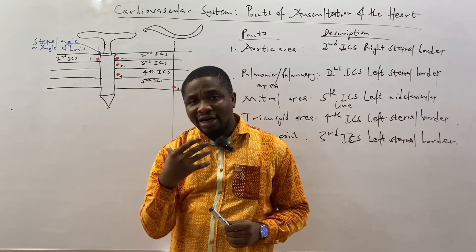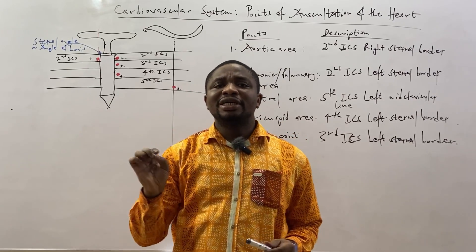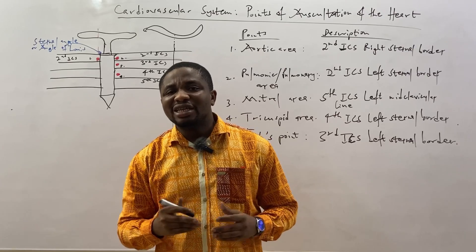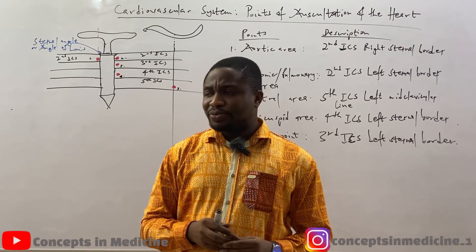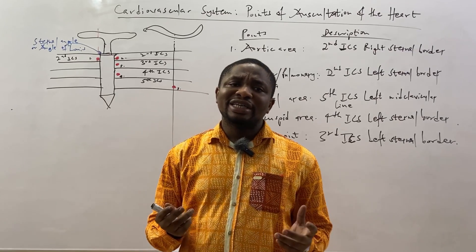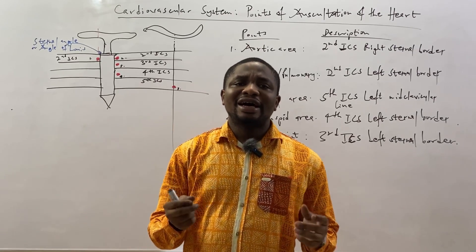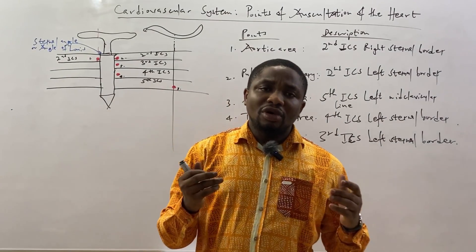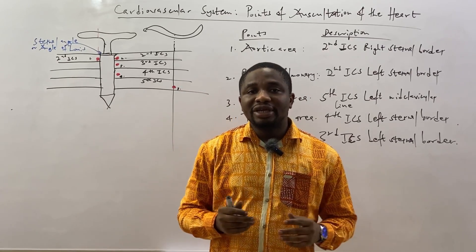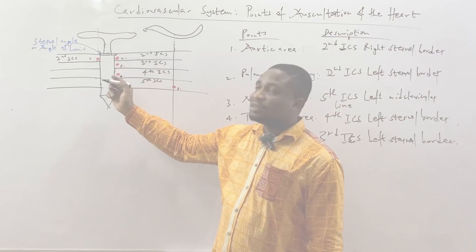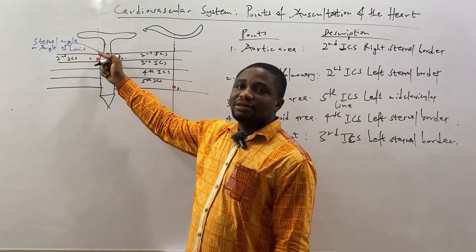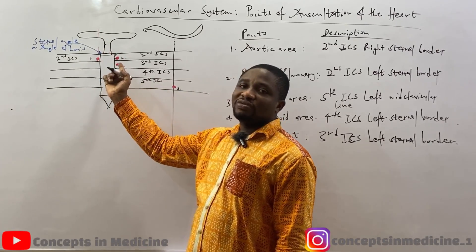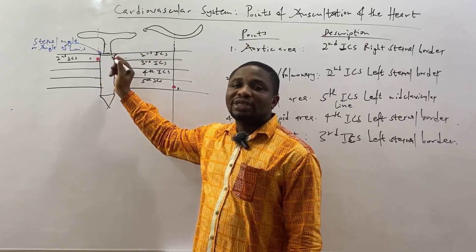The manubriosternal junction, or the angle of Louis, or the sternal angle, corresponds to the second rib and laterally extends into the second intercostal space, meaning that when you listen for the heart sounds, you will need to find a point. How do you find a point? You have to palpate the sternal angle, which is felt as a transverse prominence at the junction of the manubrium and the body of the sternum. The second intercostal space is closer to the angle of Louis, so once you palpate the angle of Louis, you move laterally and you are going to enter into the second intercostal space.